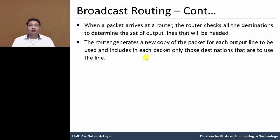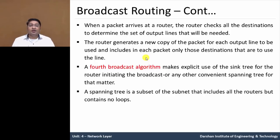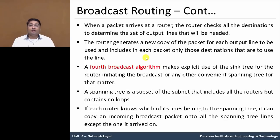The router generates a new copy of that packet for each output line to be used, and includes in each packet only those destinations that use that line. This saves bandwidth as well as time. The fourth broadcast algorithm makes explicit use of a spanning tree for routing, initiating the broadcast. A spanning tree is a subset of the subnet that includes all routers but has no loops, because it uses a spanning tree from the root node to leaf nodes. Each router knows which of its lines belong to its spanning tree and can copy an incoming broadcast packet onto all other spanning tree lines except the one it arrived on.